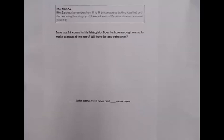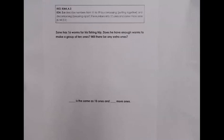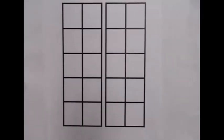We start by looking at IOA 3A through the decomposing lens — we know the whole and we decompose it into two parts: 10 ones and some more ones. Here is a problem: 'Zane has 16 worms for his fishing trip. Does he have enough worms to make a group of 10 ones, and will there be extra ones?' The sentence stem for decomposing is: '___ is the same as 10 ones and ___ more ones.' To solve concretely, first count out 16 manipulatives, then see if you can make a group of 10 ones. A 10-frame is a helpful organizational tool because it visually shows that group of 10 ones.